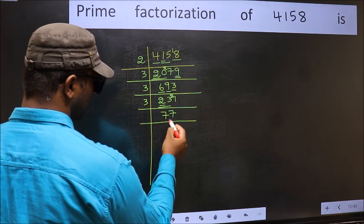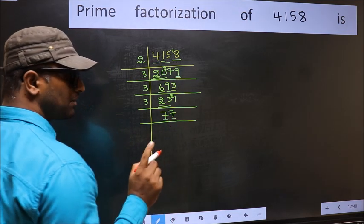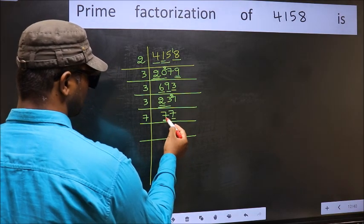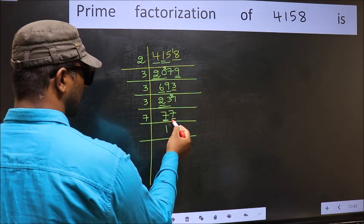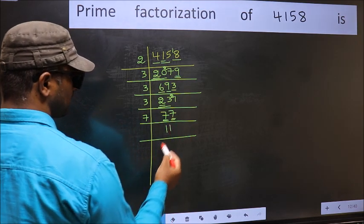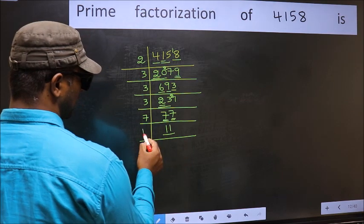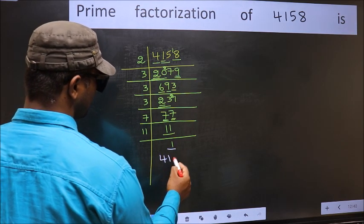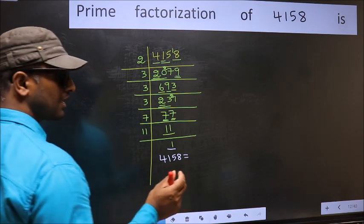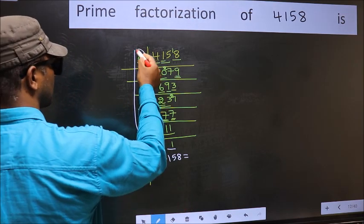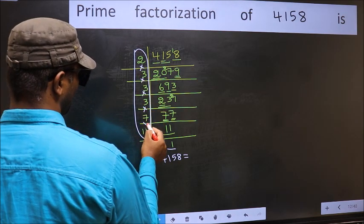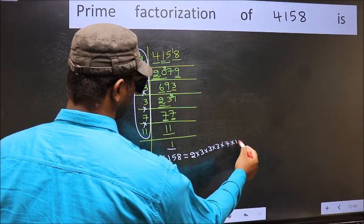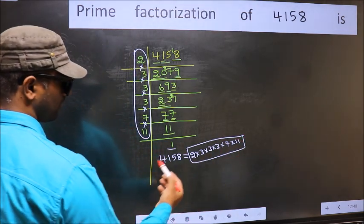Now observe that each digit is 7, and most importantly 7 is a prime number. So take 7 here. First number 7 — when do we get 7 in the 7 table? 7 ones: 7. The other number 7 — when do we get 7 in the 7 table? 7 ones: 7. Now here we have 11, and 11 is a prime number, so 11 ones: 11. We got 1 here. So the prime factorization of 4158 is the product of these numbers: 2 × 3 × 3 × 3 × 3 × 7 × 11. This is the prime factorization of 4158.